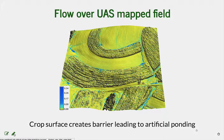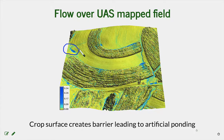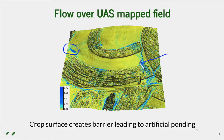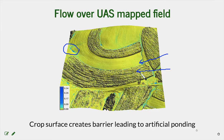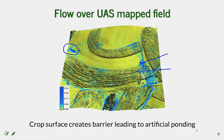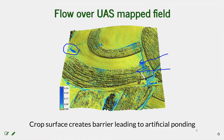Although the depressions are very well captured, we also get artificial ponding in the area where the crop essentially creates an artificial barrier. This would be realistic if the area were very dense tall grass, but if it is a row crop like corn, then the water will get through. We need to use a bare ground surface instead of the digital surface model that includes vegetation and creates a barrier to flow.